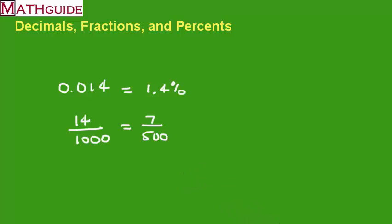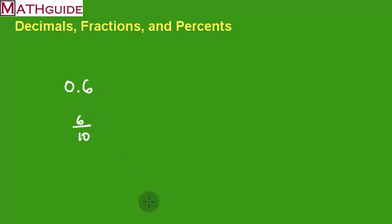Let's try another example. Let's say we had 0.6. Now, this is in the tenths position, so we would say that this is six-tenths. Of course, I could reduce this. I could divide the top by two and the bottom by two. So I would say that this is three-fifths. So 0.6 is equal to three-fifths. How do I change it to a percent? I'm going to move the decimal two places to the right. So it's going to be 60 percent.